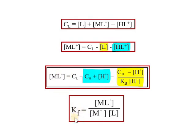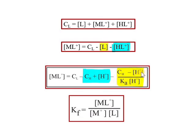The formation constant equals the concentration of ML+ upon M+ concentration times L concentration. We know the initial concentrations of metal ion CM and hydrogen ion CH. The concentration of H+ ion is measured by the pH meter or potentiometry. We also know KA, the formation constant for the acid. Using the pH meter reading for H+ concentration, and knowing CH, CM, CL, and KA, we can calculate all values needed.